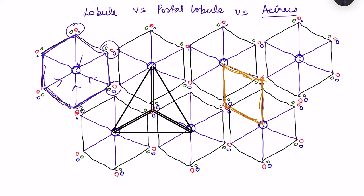The branches at each corner — one hepatic arteriole, one portal venule, and one bile duct forming a portal triad — supply blood to three different hepatic lobules. The triangle formed by these three lobules sharing one portal triad is called a portal lobule. So a portal lobule is a combination of three hepatic lobules served by one portal triad.